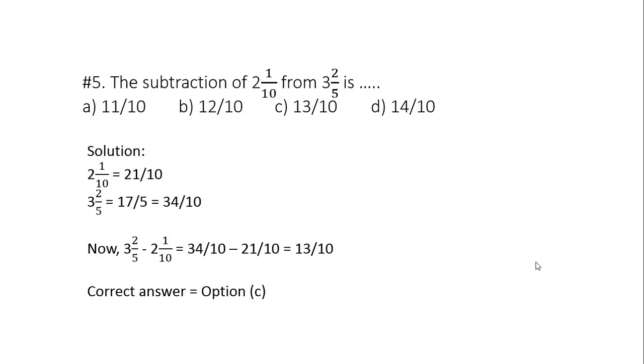Question 5: The subtraction of 2 1 by 10 from 3 2 by 5 is how much? So 2 1 by 10 is a mixed fraction, it can be written as proper fraction as 21 divided by 10. Similarly, 3 2 by 5 can be written in proper fraction as 17 divided by 5. Multiplying the numerator and denominator by 2, 17 by 5 can be written as 34 divided by 10. We made the denominator same so that subtraction will be easier. So now 3 2 by 5 minus 2 1 by 10 equals to 34 by 10 minus 21 by 10. 34 minus 21 is simply 13 by 10, so the right option is C.